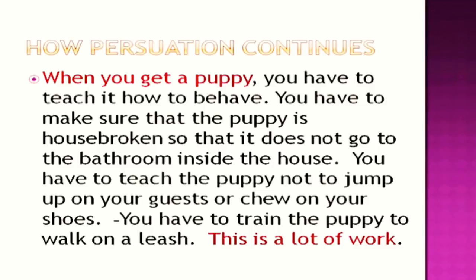The essay continues: 'When you get a puppy, you have to teach it how to behave. You have to make sure that the puppy is housebroken, so that it does not go to the bathroom inside the house. You have to teach the puppy not to jump up on your guests or chew your shoes. You have to train the puppy to walk on a leash. This is a lot of work.' What is remarkable to note here is how he is talking about the inconveniences of getting a puppy, listing them out, and then claiming this requires a lot of work — rigorous training.